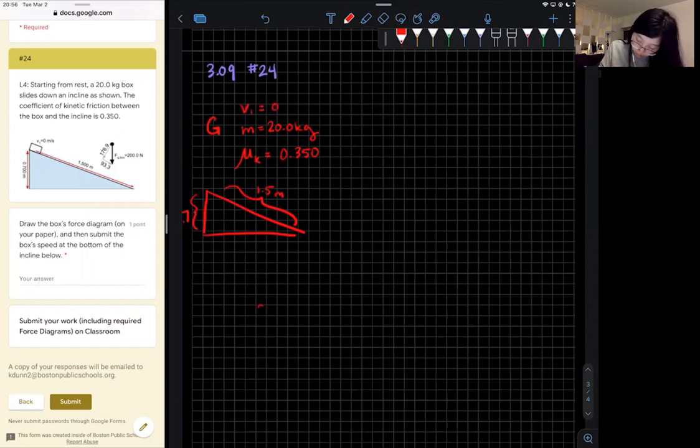I'll also do my best to draw a free body diagram. Normal gravity is pointing down here and it's equal to mass times g which is 200.